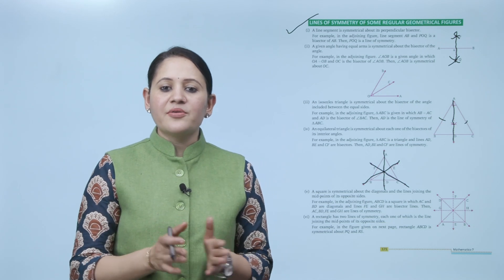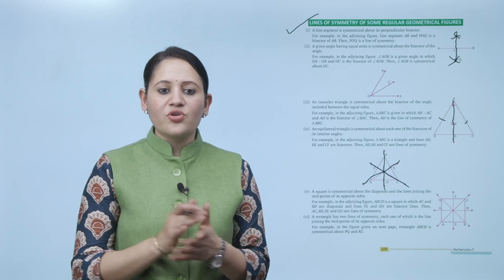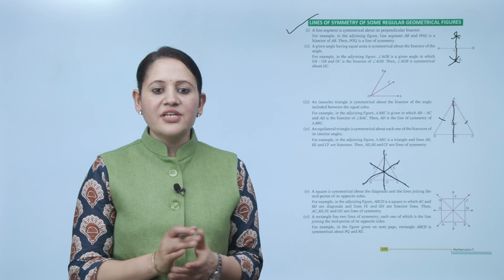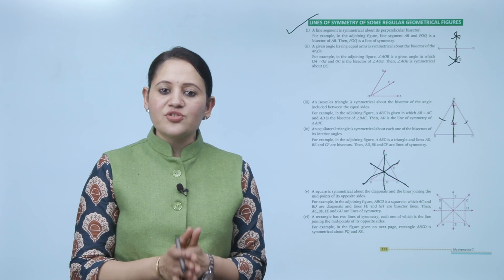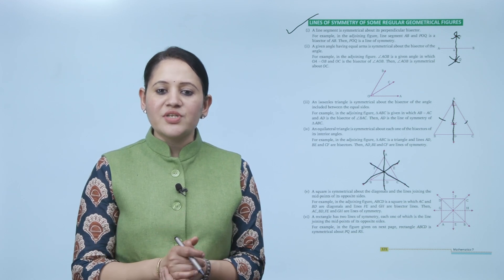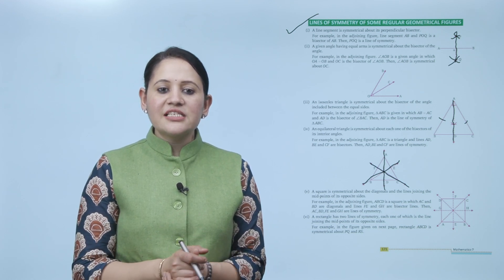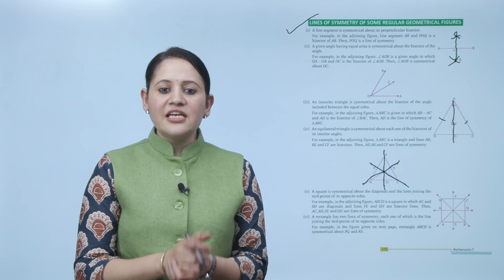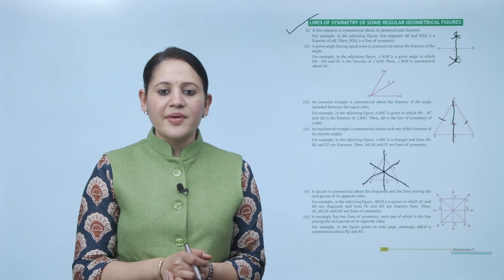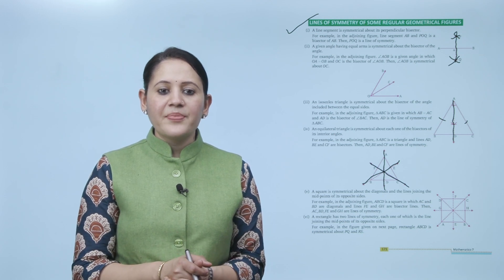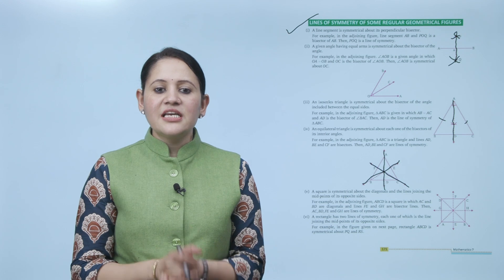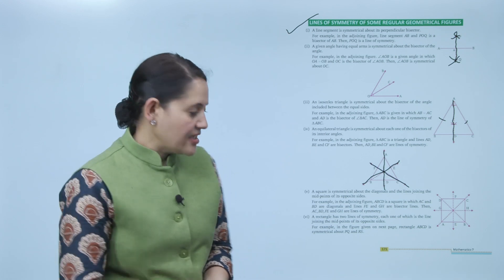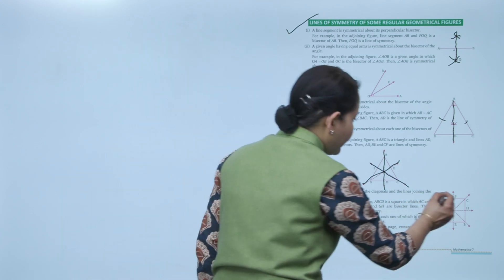A square is symmetrical about the diagonals and the line joining the midpoints of its opposite sides. For example, in the adjoining figure, square ABCD has diagonals AC and BD, and lines FE and GH are the bisectors joining midpoints. Then AC, BD, FE, and GH are the four lines of symmetry in a square.